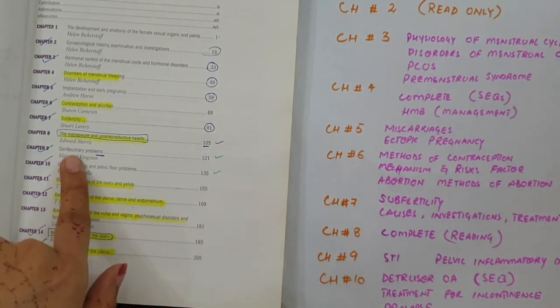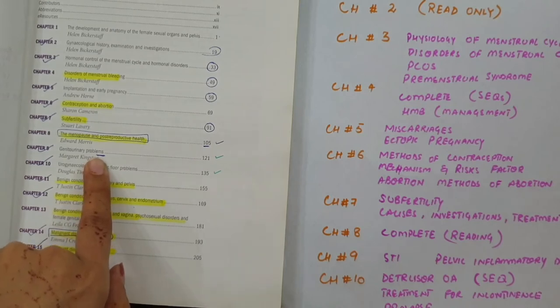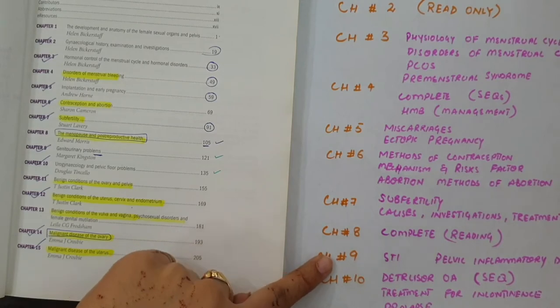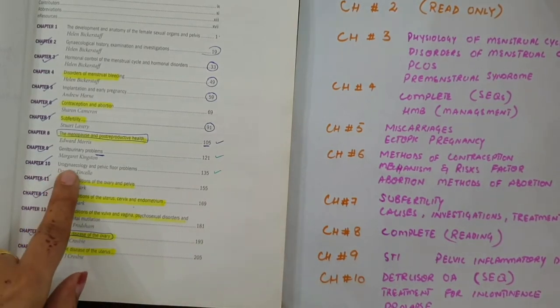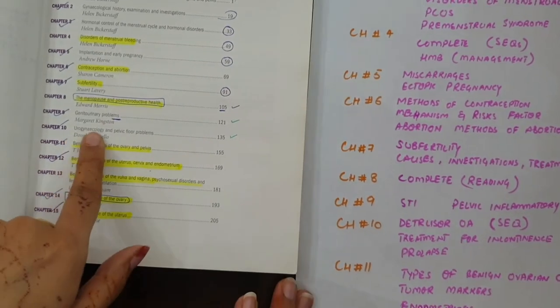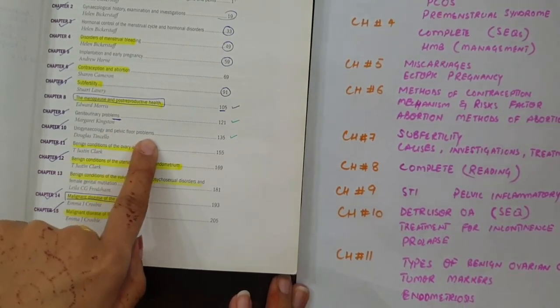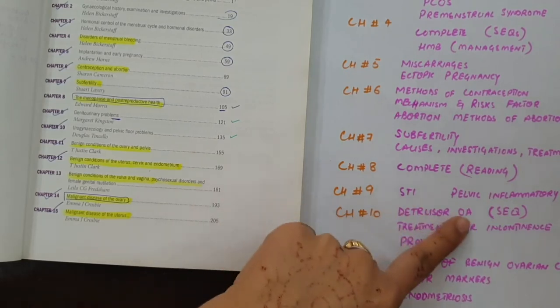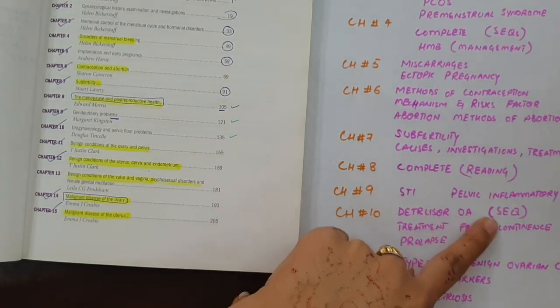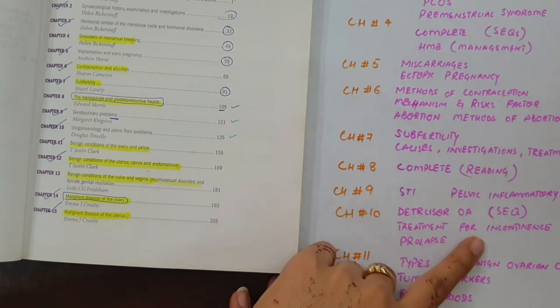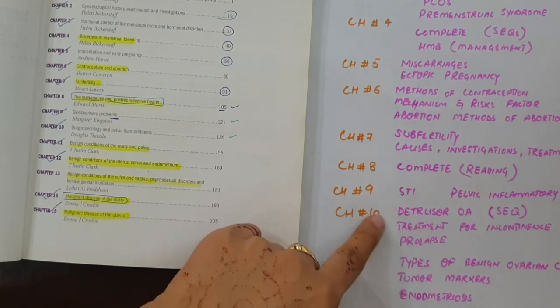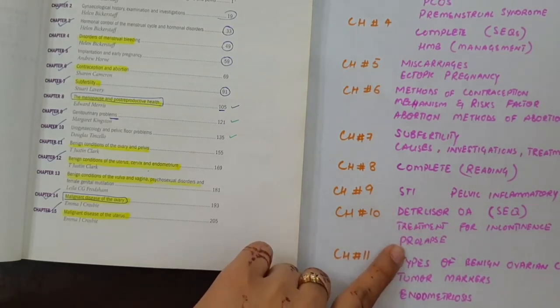For that, there are nine chapters of genital urinary problems. In the ninth chapter, more important are sexually transmitted infections and pelvic inflammatory disease. Then comes chapter 10, which is about urogynecology and pelvic floor problems. In urogynecology, the most important is detrusor overactivity, overactive bladder, and treatment for incontinence. Then prolapse. Prolapse is important, the whole topic is important - prolapse causes, prolapse degrees and prolapse management. All these things are important.